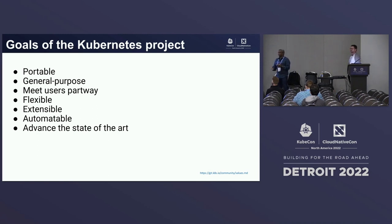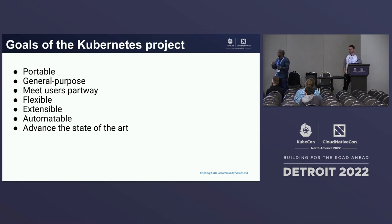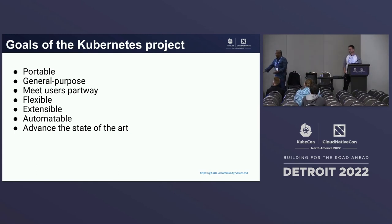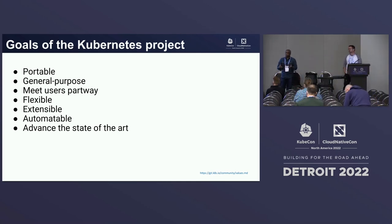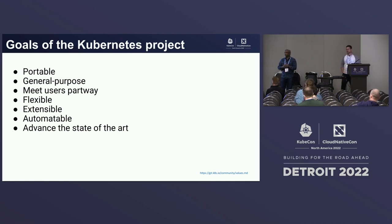We'll start by looking backwards at where we ended up. Some of these were goals that were there right at the beginning — general purpose, portable, meet users halfway. These are things that explain why you're here; we were able to achieve some of these goals. There is still a lot of things to do, and that's why we are here.